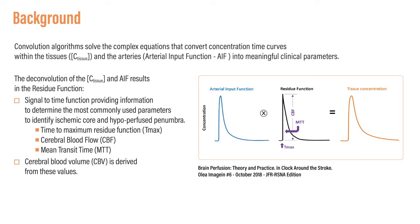Mathematical convolutional algorithms solve the complex equations that convert the concentration time curves in the tissue and the arteries into meaningful clinical parameters. The residue function is a signal-to-time function that provides information to determine the most commonly used parameters to identify core and penumbra: time-to-maximum residue function, Tmax; cerebral blood flow, CBF; mean transit time, MTT; and the derived cerebral blood volume, CBV.